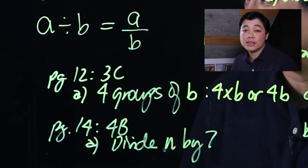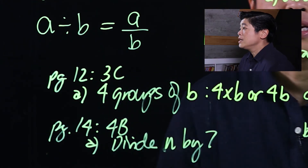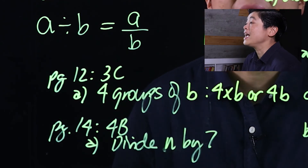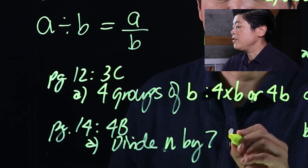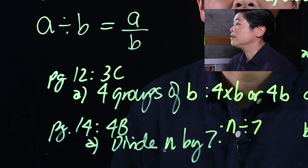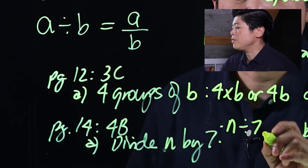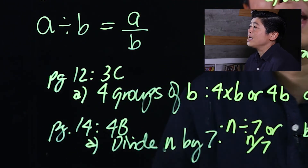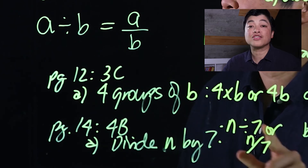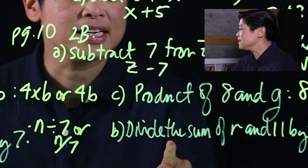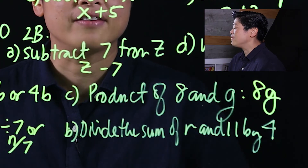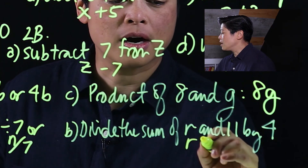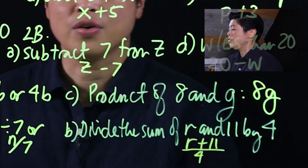On page 14, item 4b says 'divide n by 7,' which means n divided by 7 — we write it as the fraction n over 7. As mentioned, going forward if it says divide, we'll make it a fraction. For example, 'divide the sum of r and 11 by 4' becomes (r + 11) over 4. That concludes Lesson One of Chapter One — see you in the next lesson.